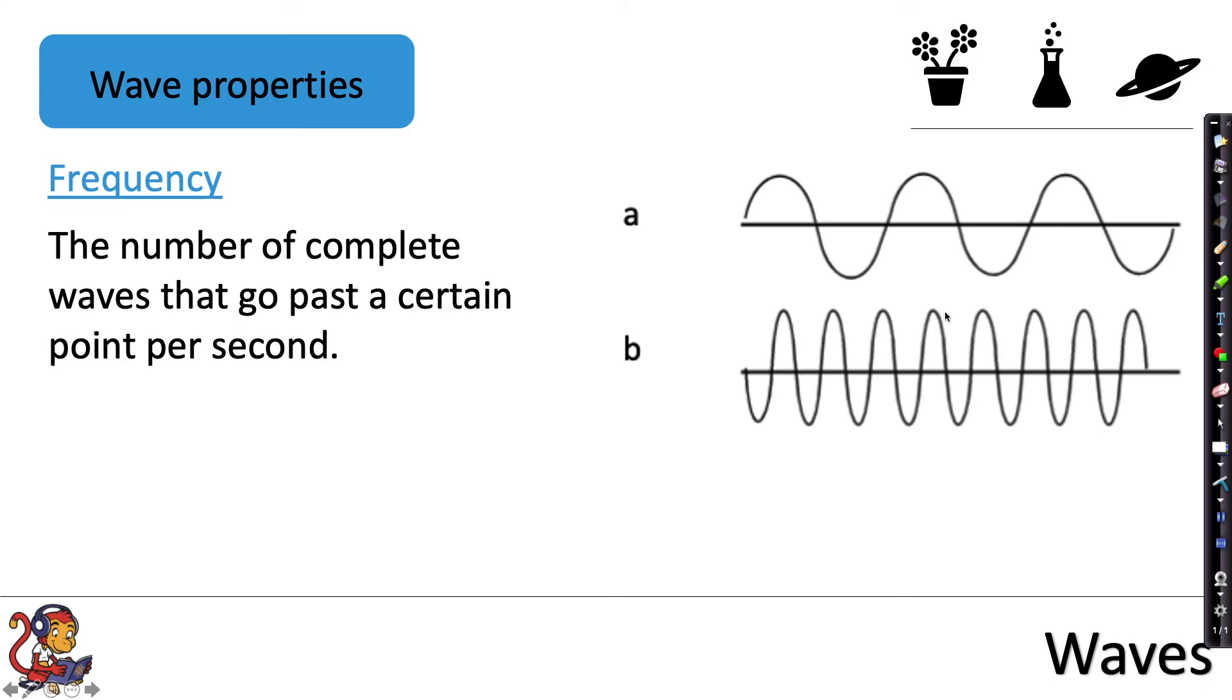Frequency is the number of complete waves that go past a certain point per second. So one complete wave, if we start from the midpoint here, would go up, down and then back again to that same midpoint position. So on this wave diagram here we've got one, two, three complete waves.